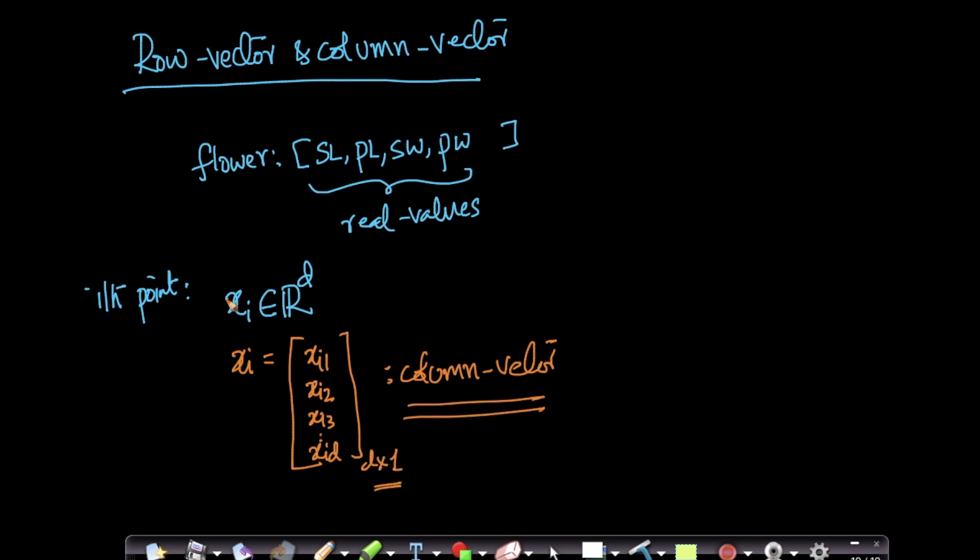So whenever you are given a data point belonging to R^d, what it means, the d part here means that it is a d-dimensional column vector.